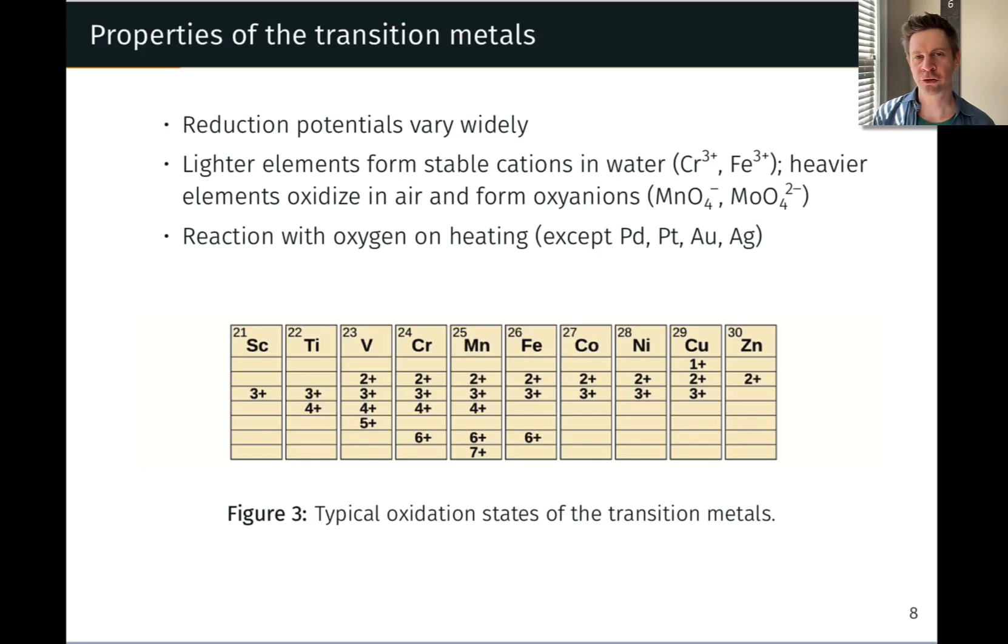In thinking about the typical charges of the main group elements, they follow patterns that are pretty clear based on position on the periodic table. Group 1 forms plus 1 cations, group 2 plus 2, group 6 negative 2, group 7 negative 1, and so on.